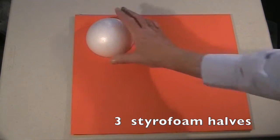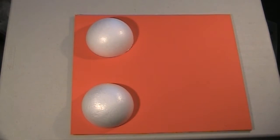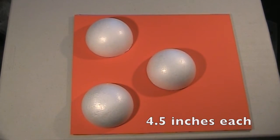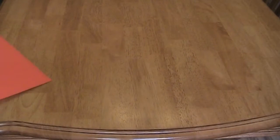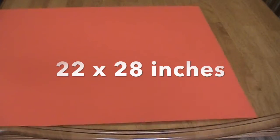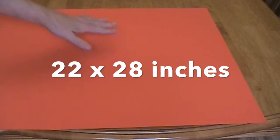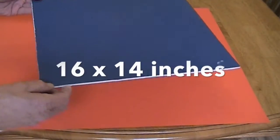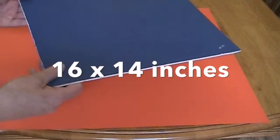Next, you'll need three halves of round Styrofoam balls. You can buy them at Michael's, Joann's, or Walmart. I'm using this 22 by 28 inch orange construction paper. You'll also need to cut a piece of foam board or cardboard 16 by 14 inches in size.